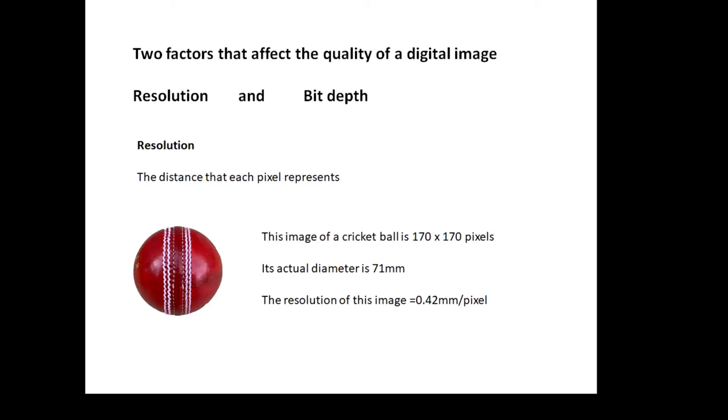Let's talk about resolution. Resolution is the distance that each pixel represents. It's a very common A-level question. The image of a cricket ball is 170 by 170 pixels. Its actual diameter is 71 millimeters. So the resolution of this image is 71 millimeters divided by 170, which is 0.42 millimeters per pixel.